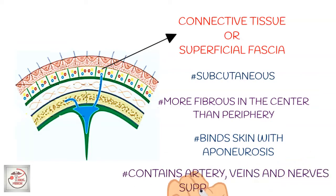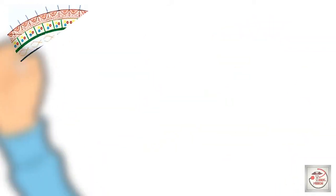Most importantly, the connective tissue layer contains arteries, veins, and nerves supplying the scalp — you can see it clearly in the image. Another important point: jab bhi is layer mein koi cut aata hai, to bleeding bahut zyada, yani profusely hoti hai. The reason is, is layer ki tendency hoti hai ki jo cut ho gayi vessels hoti hain unko open karke hi rakhti hai — it holds them open. We will cover this point again in the clinical aspects of scalp.